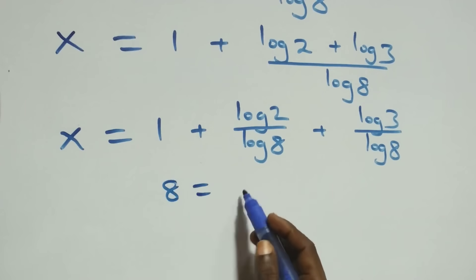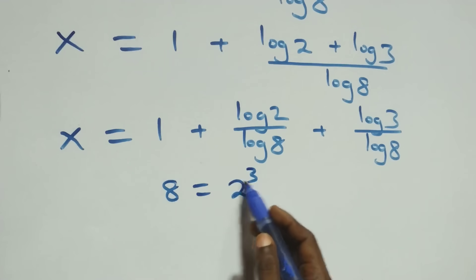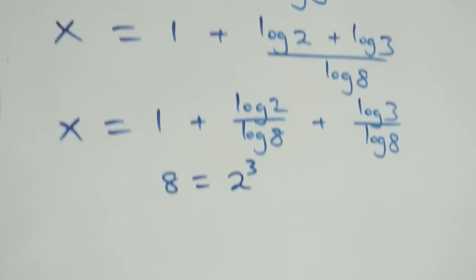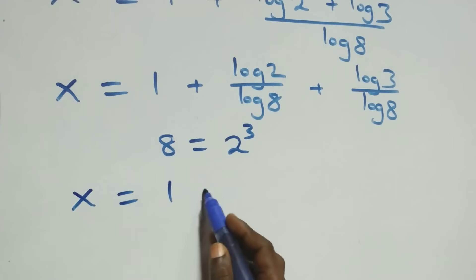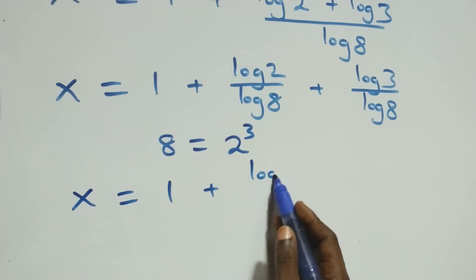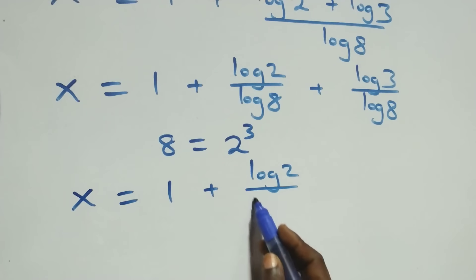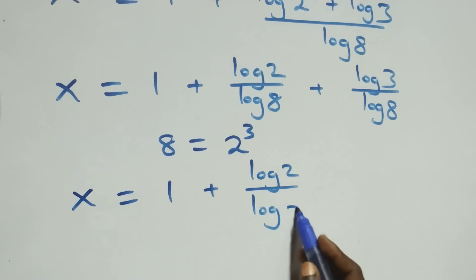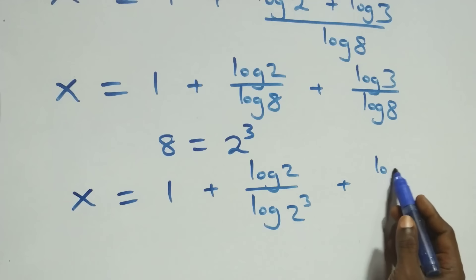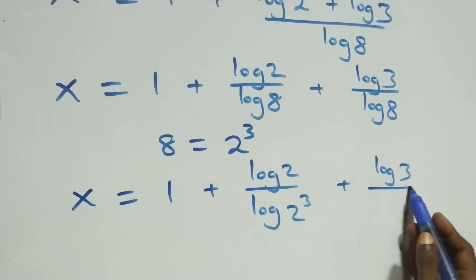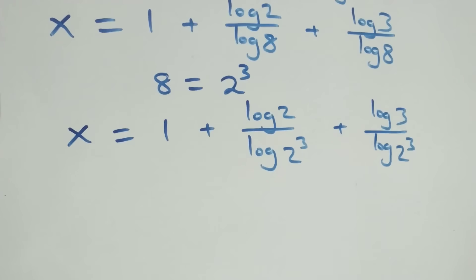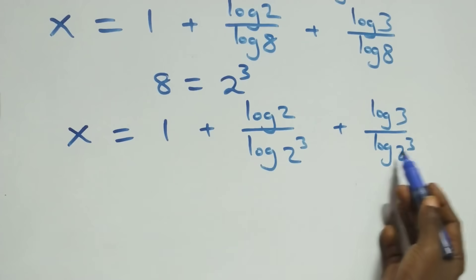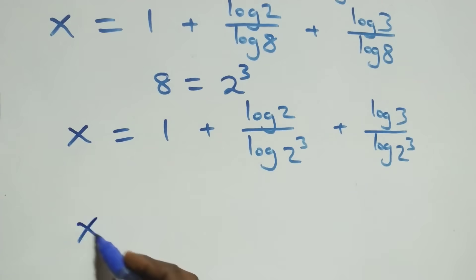Then, what we have here becomes x equals to 1 plus log 2 over log(2³) plus log 3 over log(2³). Then, we apply the logarithm power rule here. The 3 comes down, and we have x equals to 1 plus log 2 over (3·log 2) plus log 3 over (3·log 2).